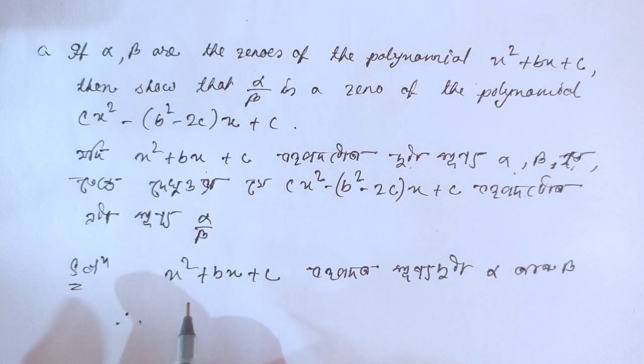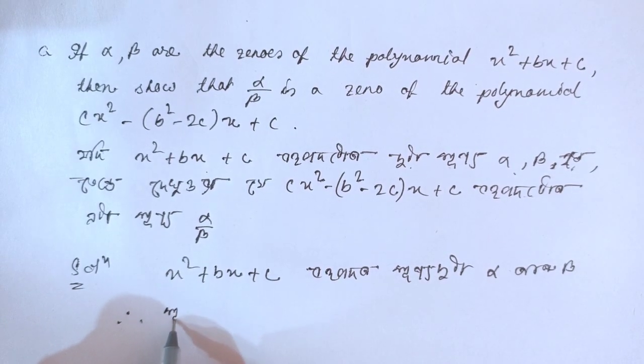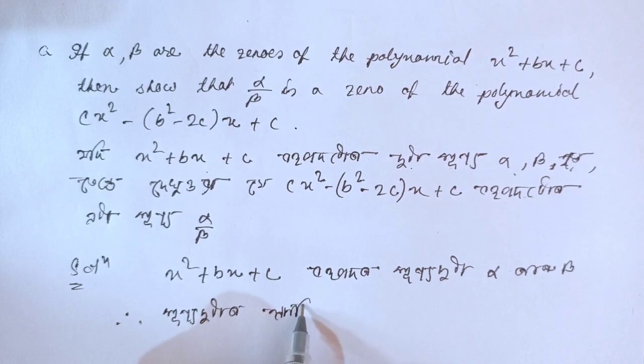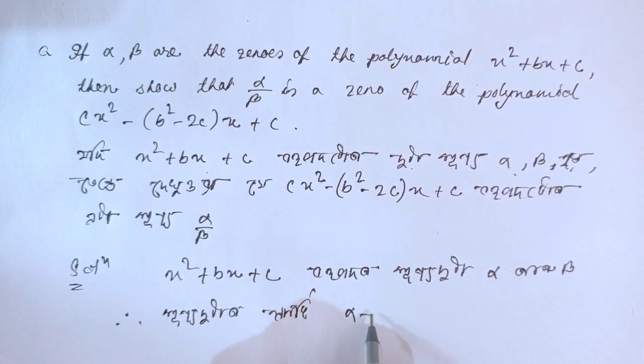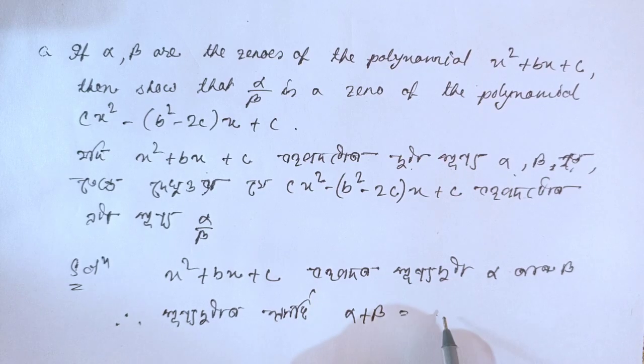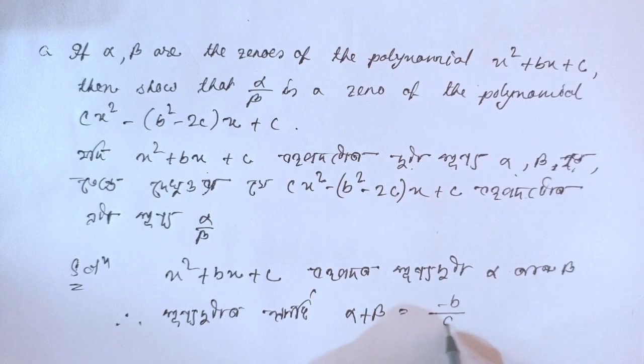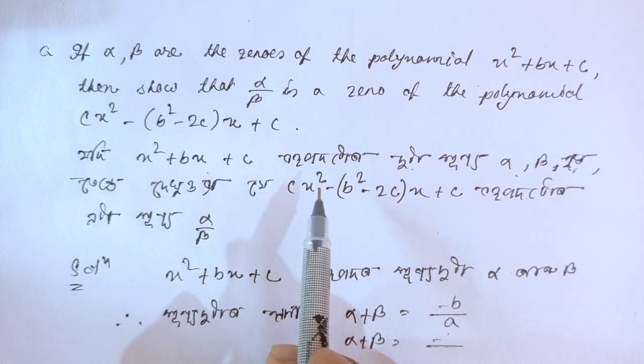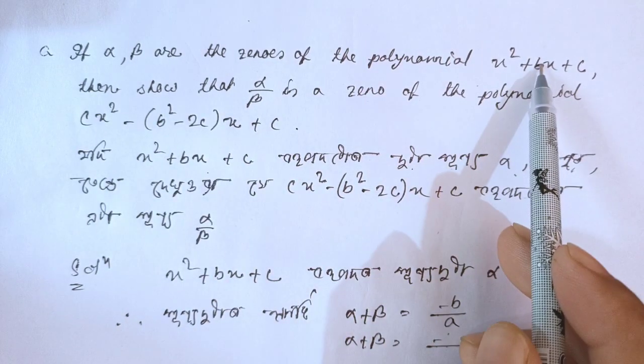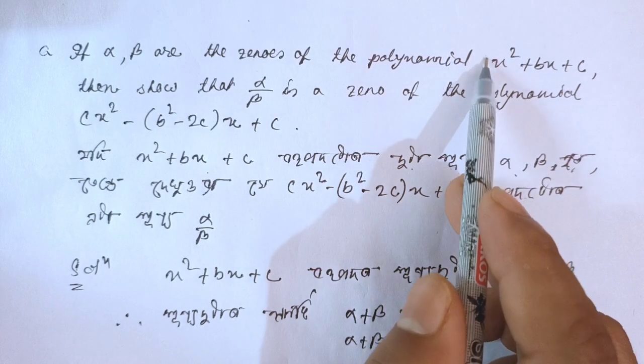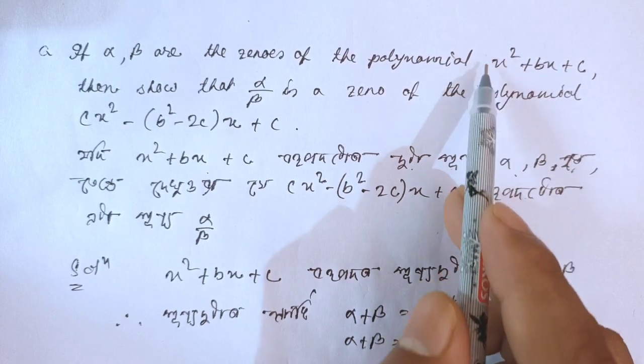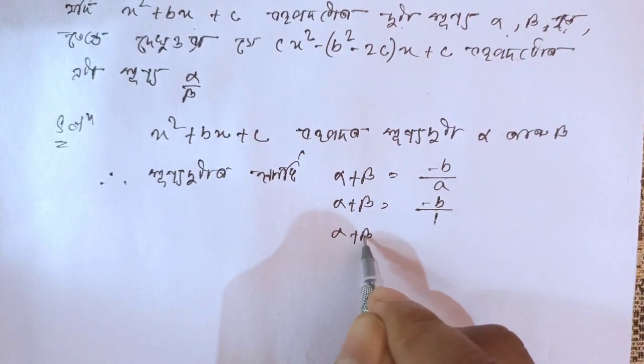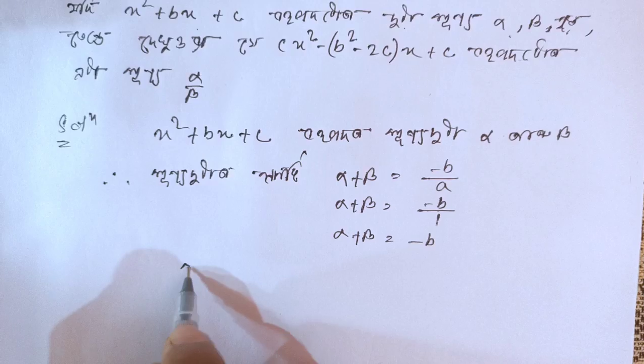Therefore, sum of the zeros: when you are, the sum will be α + β equals minus b/a. Minus b/a, where the coefficient of x² is a. Since α + β = -b, and the b value is b, the a value in x² is 1. Therefore α + β equals minus b.